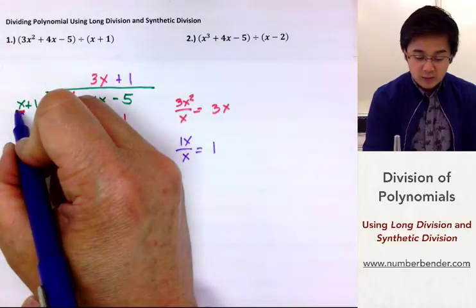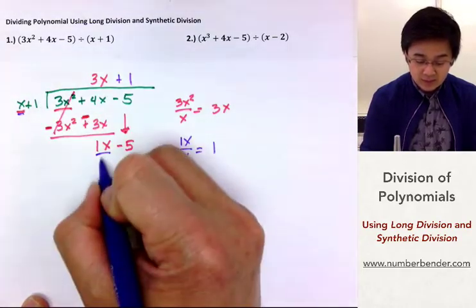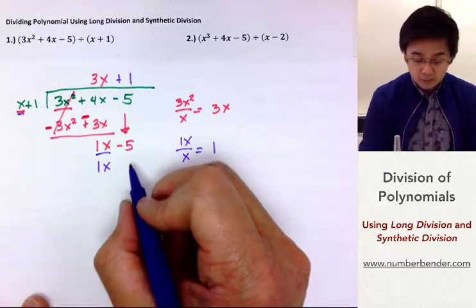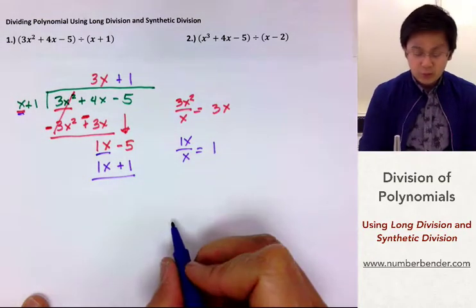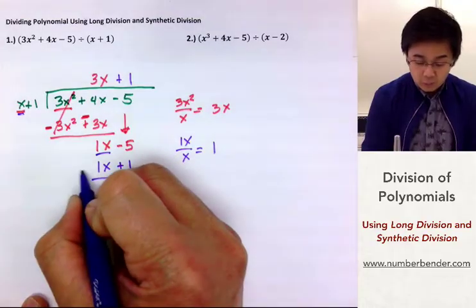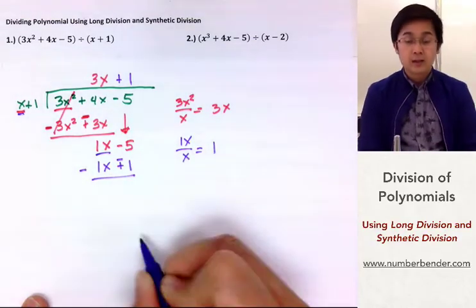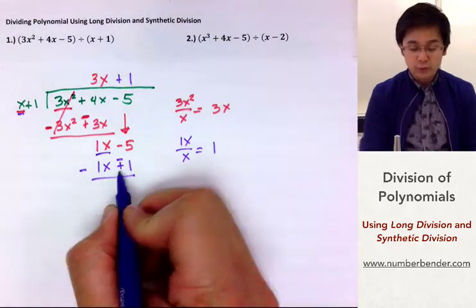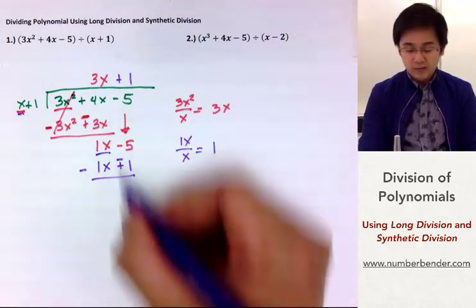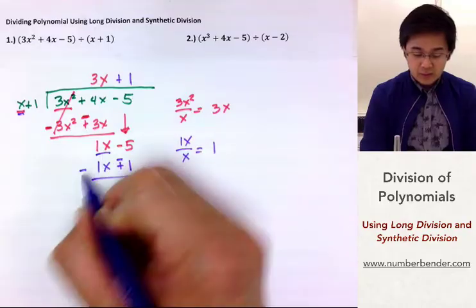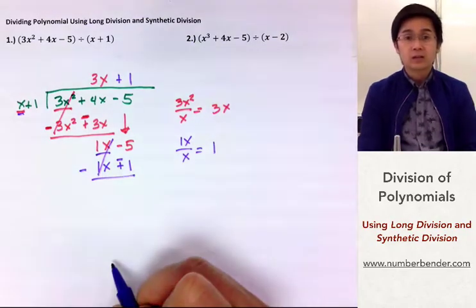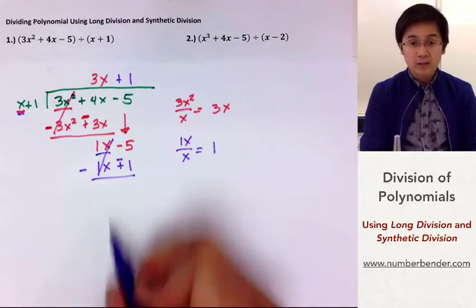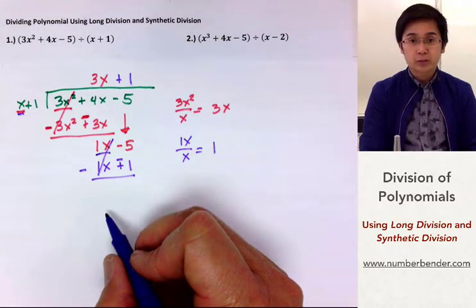Then multiply it back to x plus 1. So, 1 times x is 1x, and 1 times 1 is 1. By dividing, we're going to change the sign — so minus and minus. This is a common mistake that most students make, so please make sure to switch the sign when you're subtracting. So you have 1x minus 1x, and in the process it will turn to 0. You know you're doing it correctly whenever you're canceling the first term every time you subtract your answer.